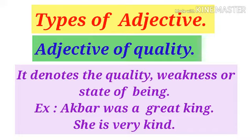Adjective of quality denotes the quality of a person or thing — it may be a weakness, a strength, a power, or a state of being. For example, 'Akbar was a great ruler' — here 'great' is the adjective of quality. Another example: 'She is very kind' — 'kind' is the adjective of quality describing the girl. Also, 'Milk is hot' — 'hot' is the adjective of quality.